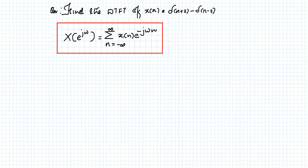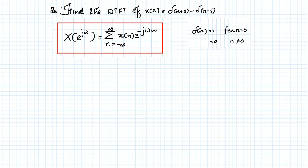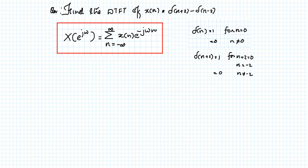The impulse signal δ(n) is defined as: δ(n) = 1 for n = 0, and 0 if n ≠ 0. That's the general definition for the discrete time impulse signal. Now the signal is different, which is given by δ(n+2). δ(n+2) can be written as 1 when n+2 = 0, or n = -2, and 0 when n ≠ -2. This discrete time signal exists at n = -2.